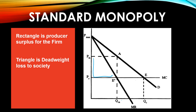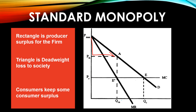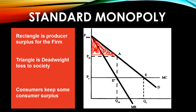We have that producer surplus rectangle from the transactions that do take place. Consumers also keep some surplus — everything below their willingness to pay but above the price they actually pay, giving them the triangle PM, A, P-max. This is much smaller than consumer surplus in the competitive situation at price PC out to QC. Society as a whole takes on deadweight loss, making this setup less efficient than the competitive outcome.